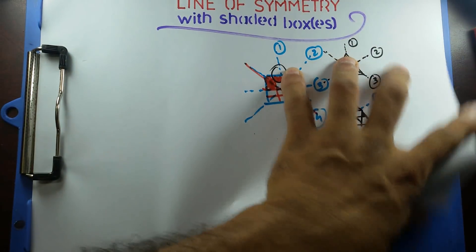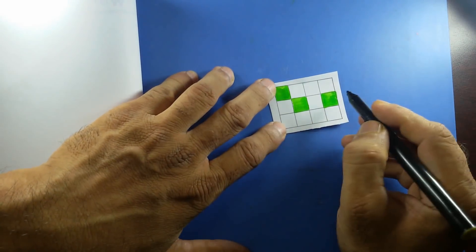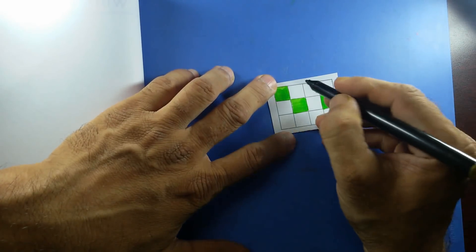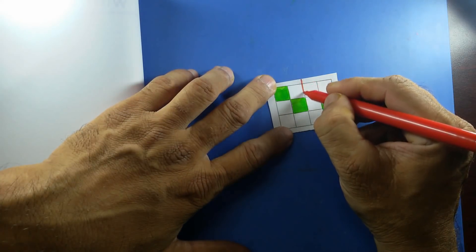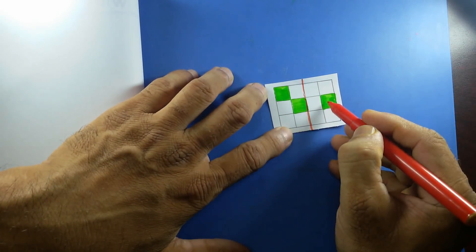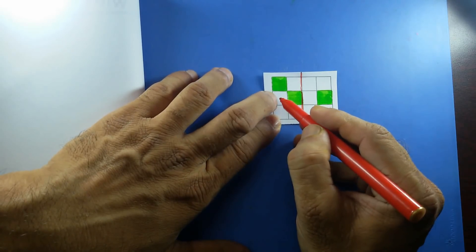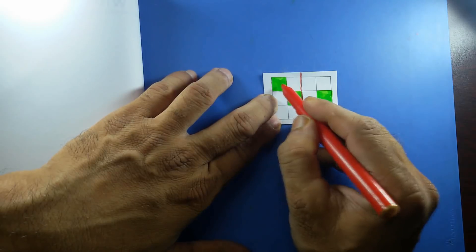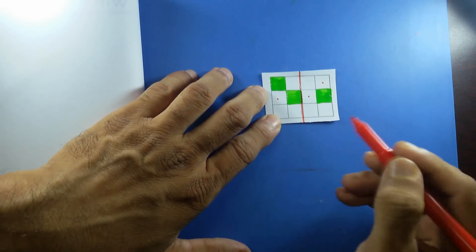Now rectangle. The question is again: shade one more box to have one line of symmetry. If I go like this vertically, then this box will coincide with this one, which is unshaded — so I need to shade this one. This one will be here — I need to shade another one. And this one with this one — so one, two, three boxes. That's not a good idea.